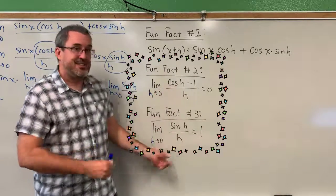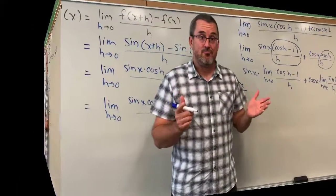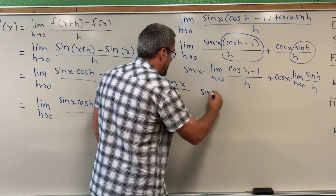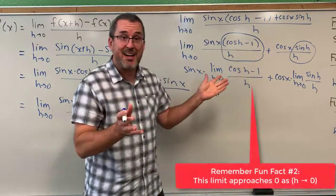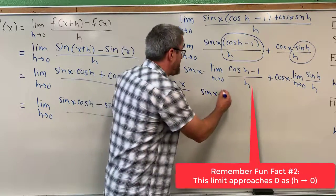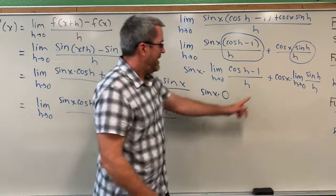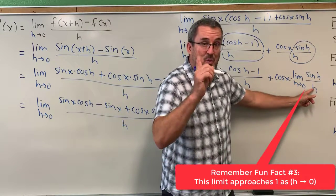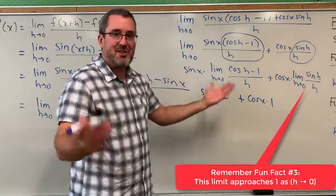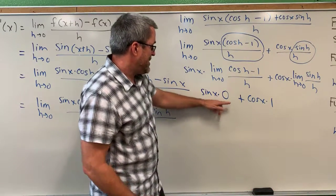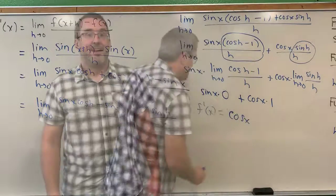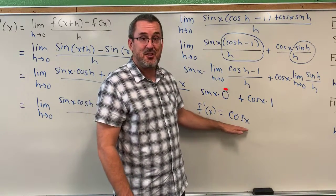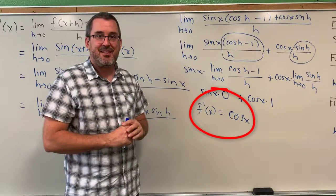Using those two limits, we now have sine of x times zero, plus cosine of x times one. Sine of x times zero is zero, plus cosine of x times one is cosine of x. So just as we predicted, the derivative of the sine of x function is indeed the cosine of x function, as we saw graphically. And now we've seen it confirmed based on the limit definition of derivative.